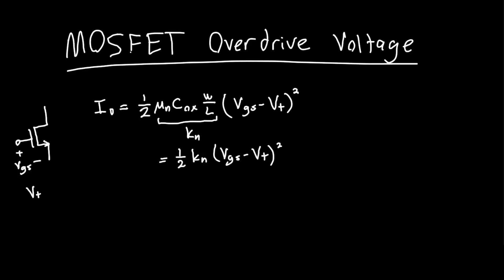Now, the overdrive voltage is this quantity here, VOV, is equal to VGS minus VT. So if we rewrite this equation again...